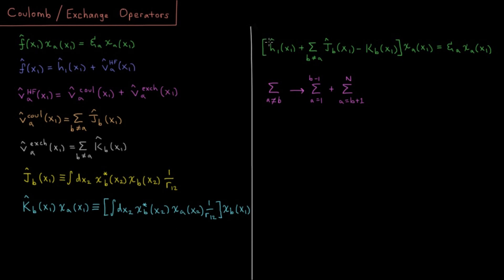And then if we add all these things together, we can express our Fock operator then as a sum of the one electron operators, kinetic energy plus all the nuclear attraction terms, plus a sum over all of the other occupied spin orbitals B not equal to A from one to N.